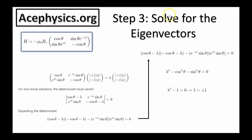For the final step of the problem, we need to solve for the eigenvectors of the Hamiltonian. If a Hamiltonian is multiplied by a constant, the eigenvectors are unchanged, so we can factor out the constant out front. We want to find the eigenvalues of this matrix and then use those to get the eigenvectors. We subtract lambda down the diagonal, take the determinant, set it equal to zero, and this gives the characteristic equation. Using the trigonometric identity cosine-squared theta plus sine-squared theta equals one, we get lambda equals plus or minus one as the eigenvalues.